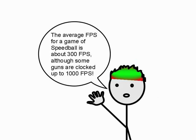The average FPS for the game of speedball is about 300 FPS, although some guns clocked up to 1,000 FPS.